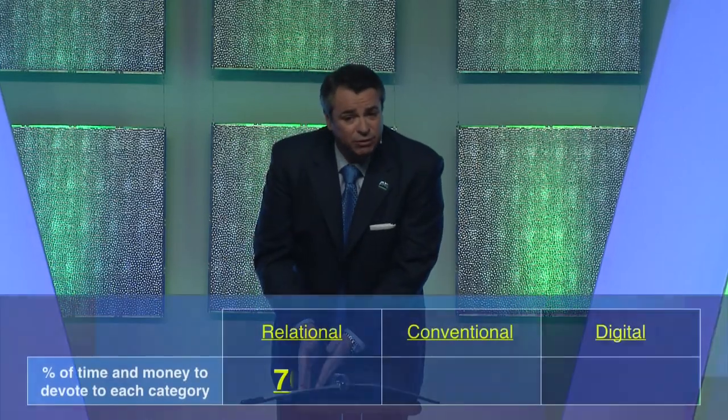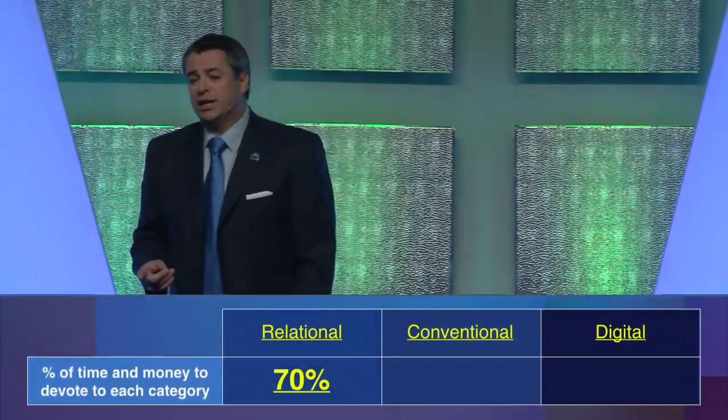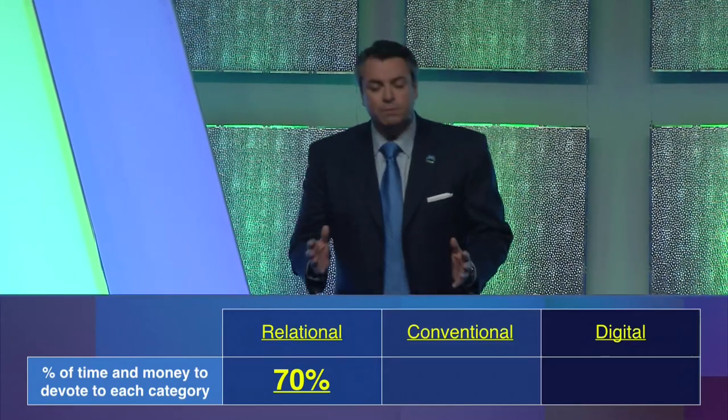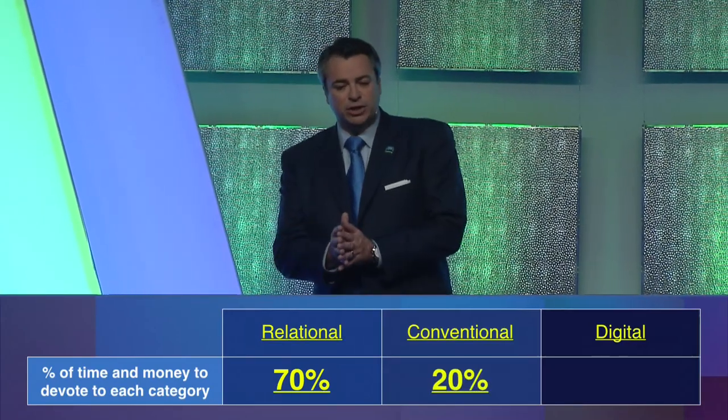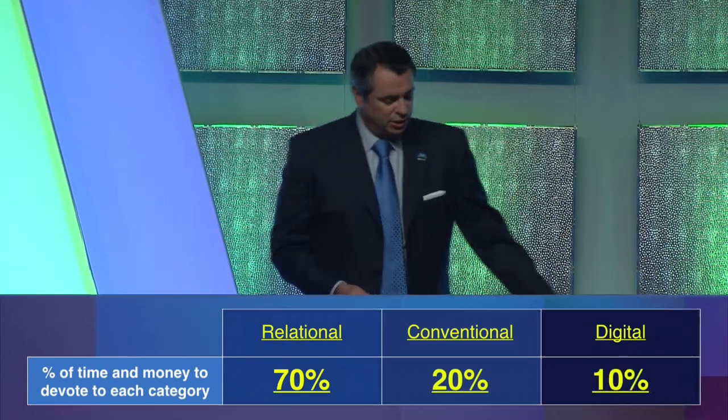You've got to have your priorities straight and manage your time. You only have so much time, you only have so much money. So here it is: 70% should be invested relationally — 70% of your money, 70% of your time, relationally. 20% on the conventional and 10% on the digital.